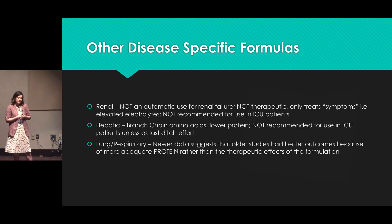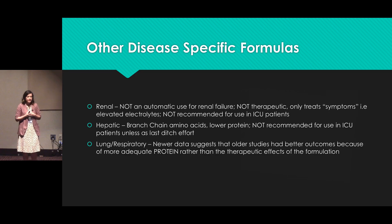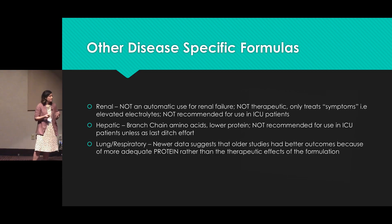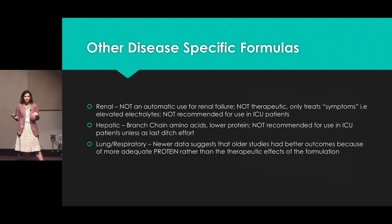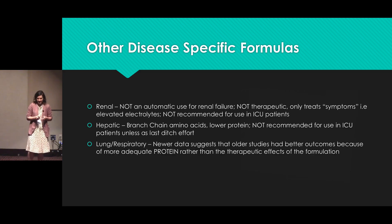There are hepatic formulas that contain branched-chain amino acids, but again the data for those isn't great and they're extremely expensive, so we try to avoid routine use. Finally, there are lung and respiratory-specific formulas — one example would be Oxepa. Newer data suggests it wasn't the special composition of that formula that helped, but rather that we were providing patients with more protein, and that was actually what was improving their outcomes.